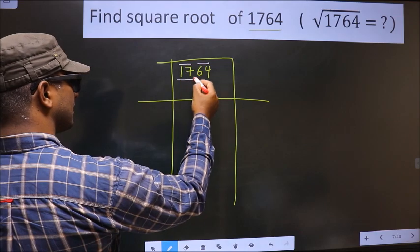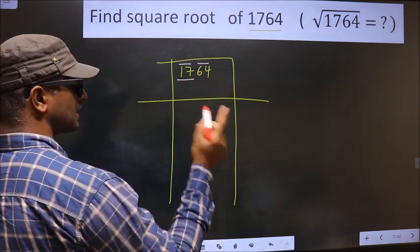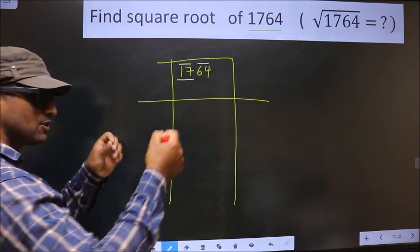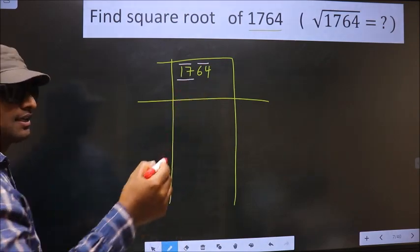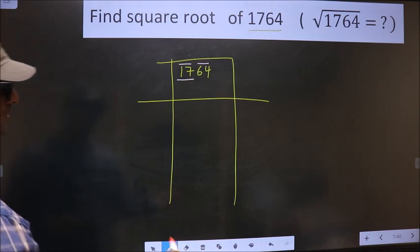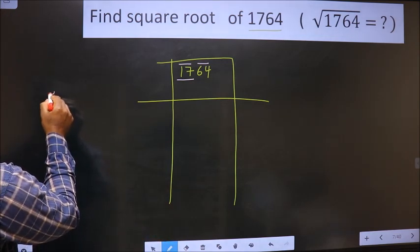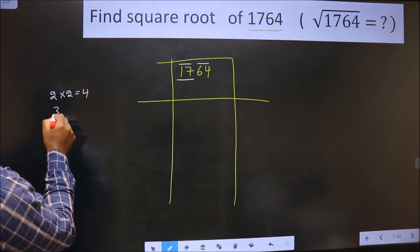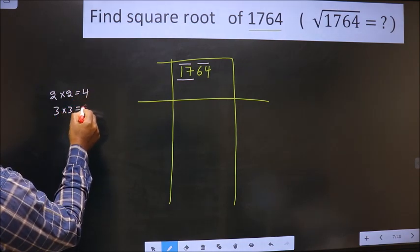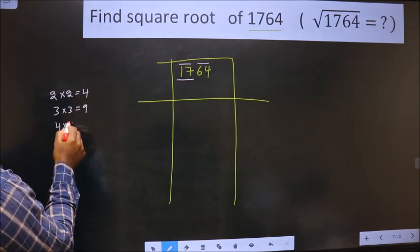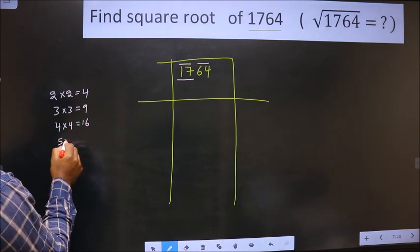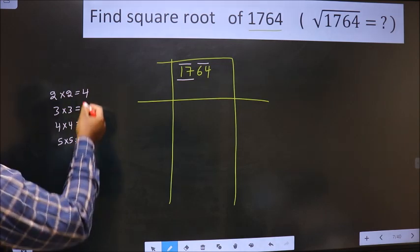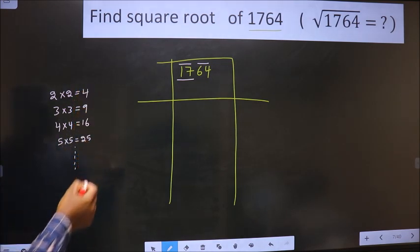Now here we have 17. It is not a perfect square. So now we should look between which two perfect squares does 17 lie. The square numbers are these, that is 2 x 2, 4, 3 x 3, 9, 4 x 4, 16, 5 x 5, 25 and so on. These are called perfect squares.